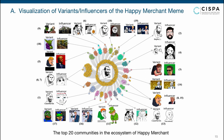Here is the visualization of some variant-influencer pairs. To check the prevalence of different variants, we build a graph with variants or influencers as nodes and their pairing relations as edges, then apply community detection techniques to divide them into different communities. Each community is a set of similar variant-influencer pairs. This figure shows the top 20 communities, each represented by a variant and influencer pair. We can see that for every pair, the variant on the left looks like a combination of the influencer on the right and the original Happy Merchant.